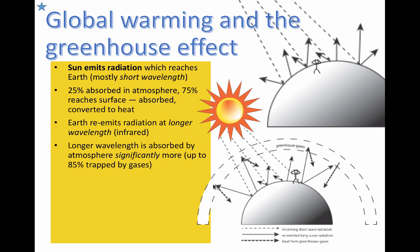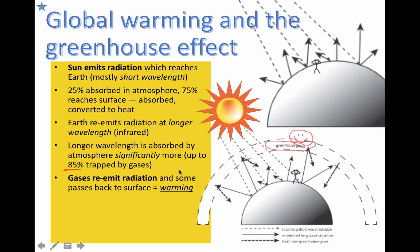Some of that longwave energy passes out into space, but a lot of it — up to 85% — actually gets trapped by greenhouse gases in our atmosphere. It's kind of a web. We'll talk about why we absolutely need this to happen, but also why it's bad, especially if we end up burning more fossil fuels and contributing more to these greenhouse gases.